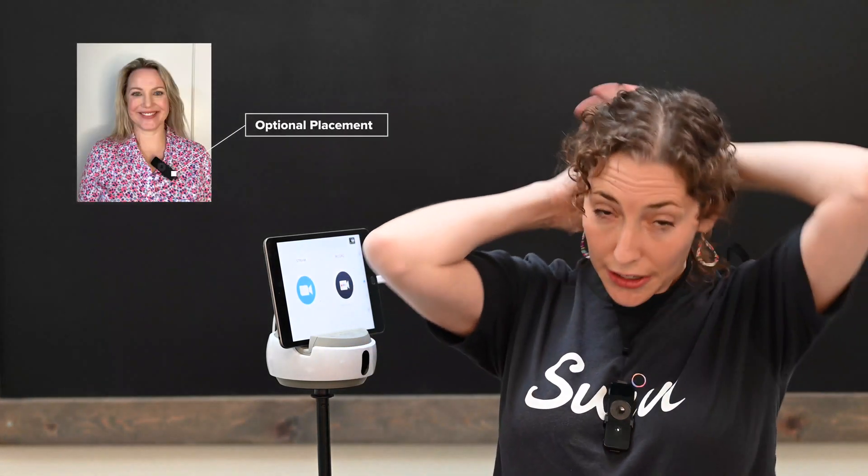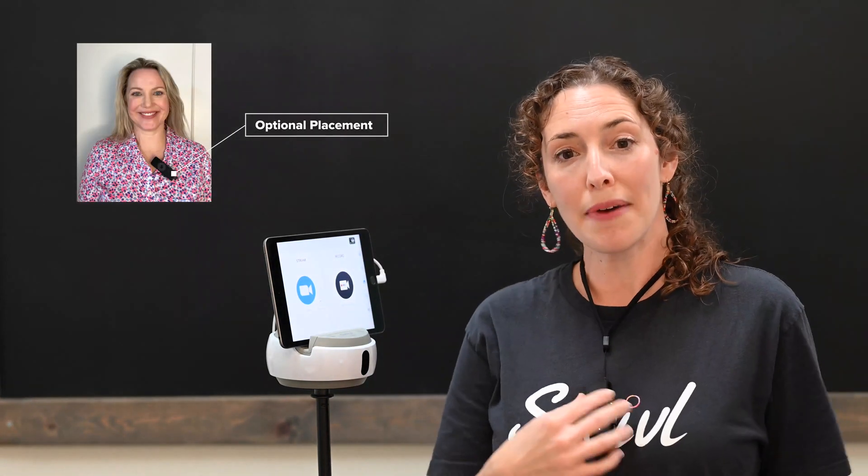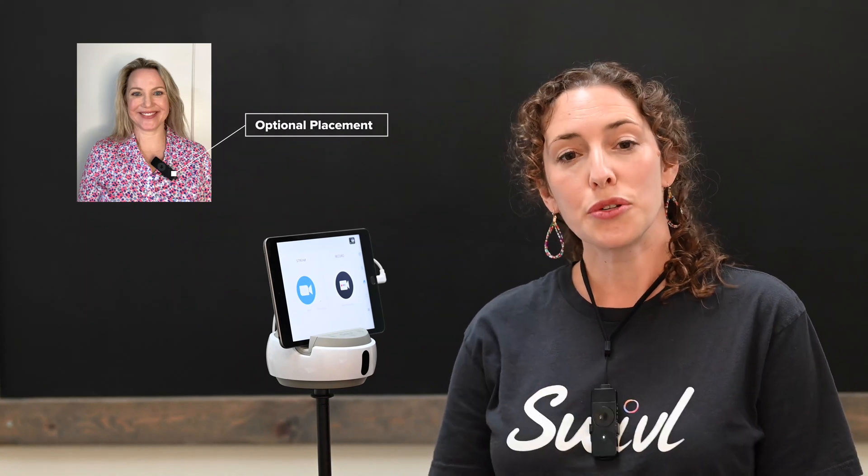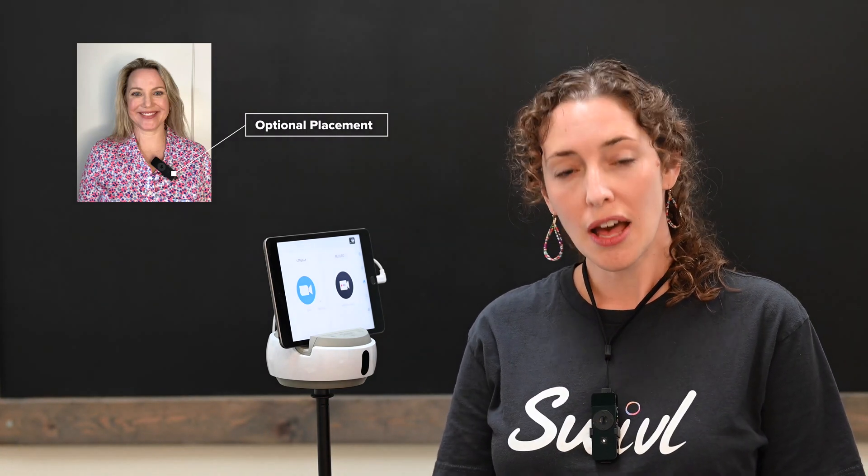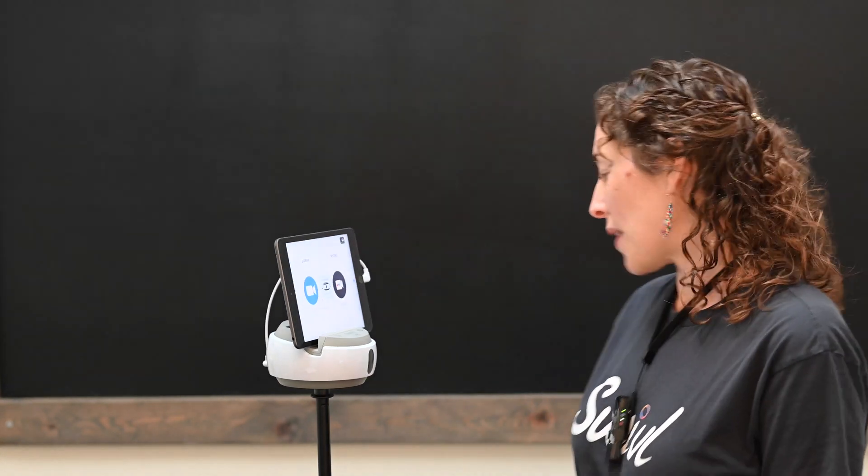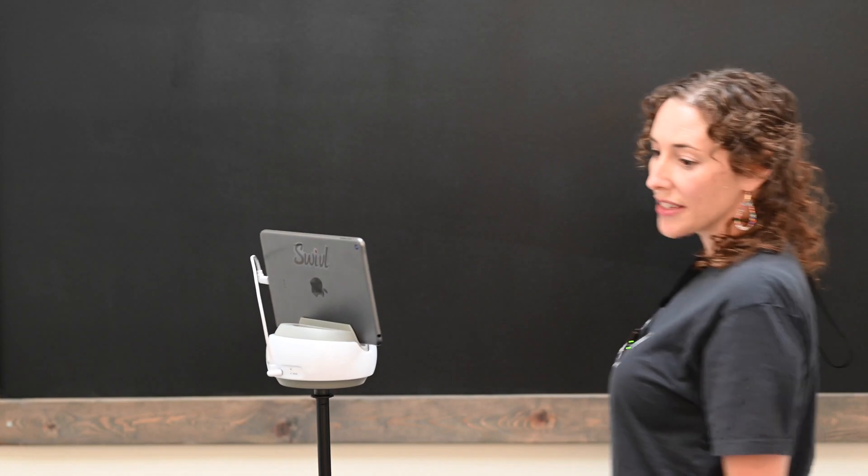Next I'm going to wear the marker. Put the marker on and adjust the neck lanyard so that the marker is at about heart height. To turn on the tracking feature, I'm going to press the center button one time. This allows the robot to track me as I move around the classroom.